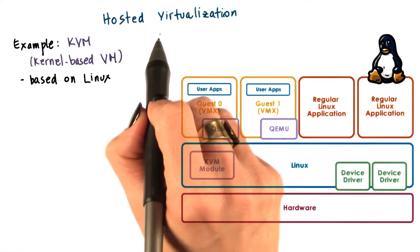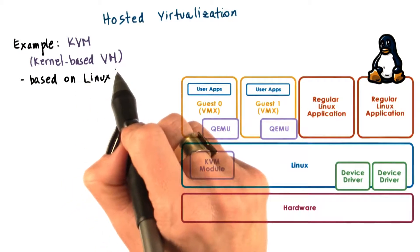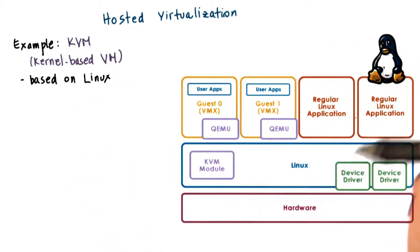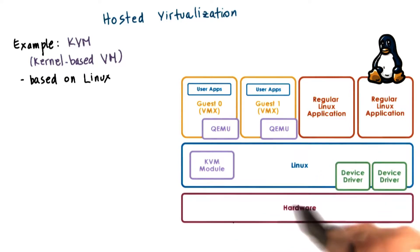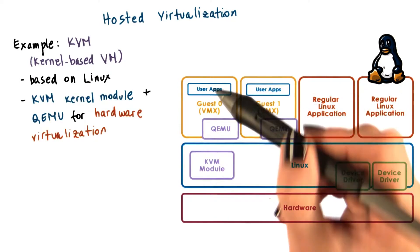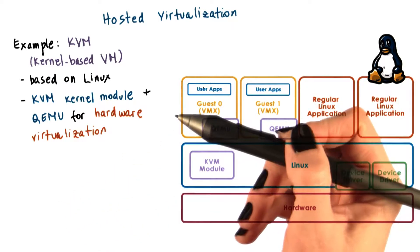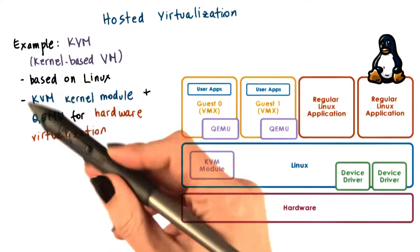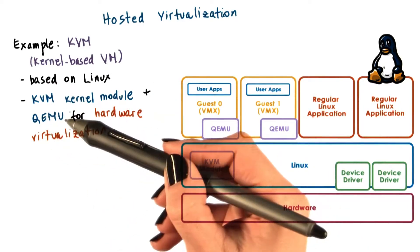One example of the hosted model is KVM, which stands for kernel-based VM, that's based on the Linux operating system. The Linux host provides all aspects of the physical hardware management, and just like any regular OS, it can run directly regular Linux applications. The support for running guest virtual machines is through a combination of a kernel module — the KVM module — and a hardware emulator called QEMU.